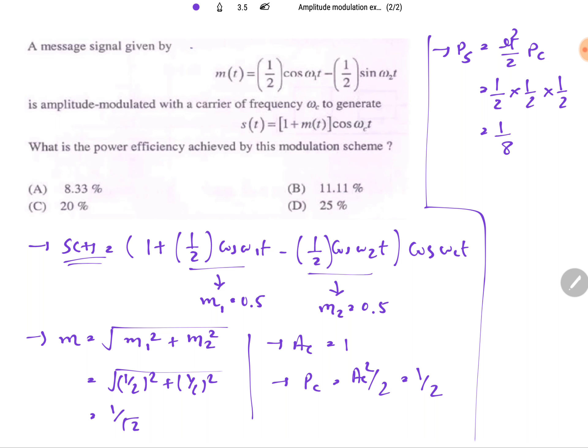Now we can calculate efficiency, that is sideband power by total power, so that is Ps plus Pc. If I place values, Ps is 1 by 8 divided by half plus 1 by 8. 1 by 8 divided by 5 by 8, so this is 1 by 5, and in terms of percentage times 100, that will be 20 percentage.